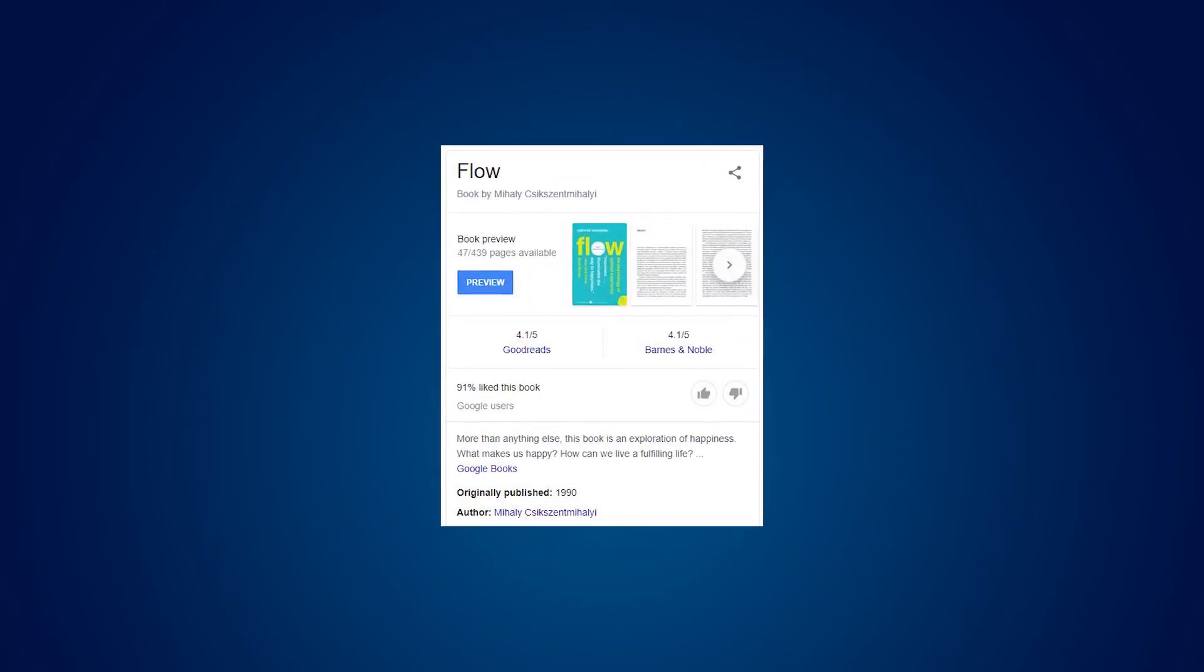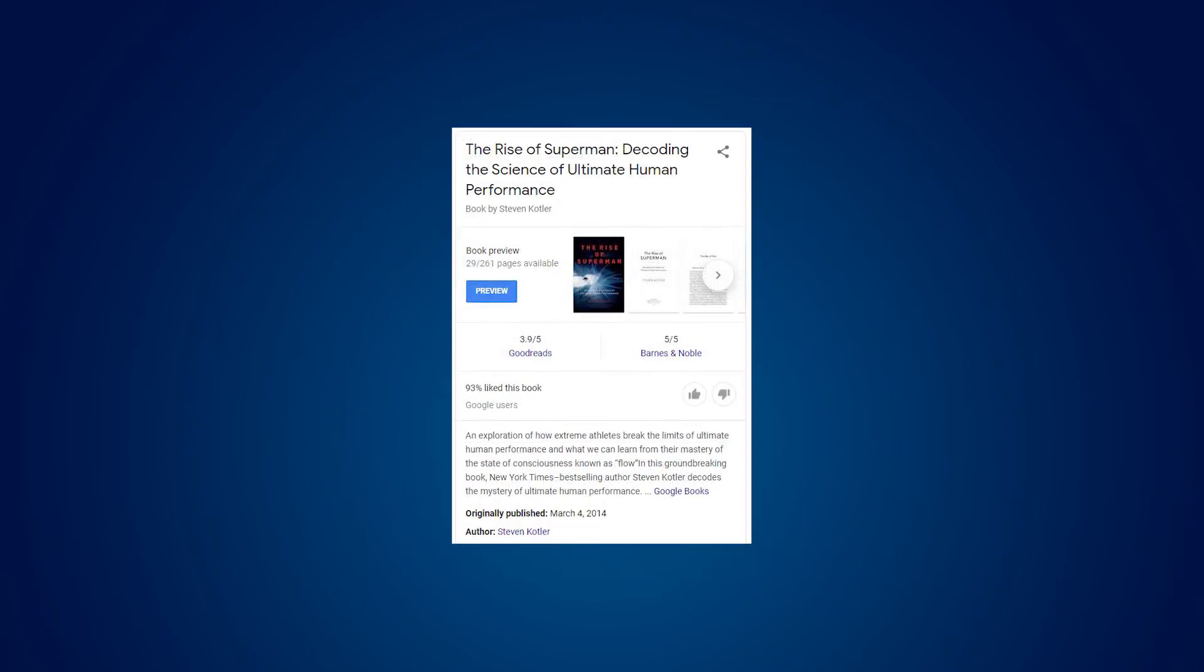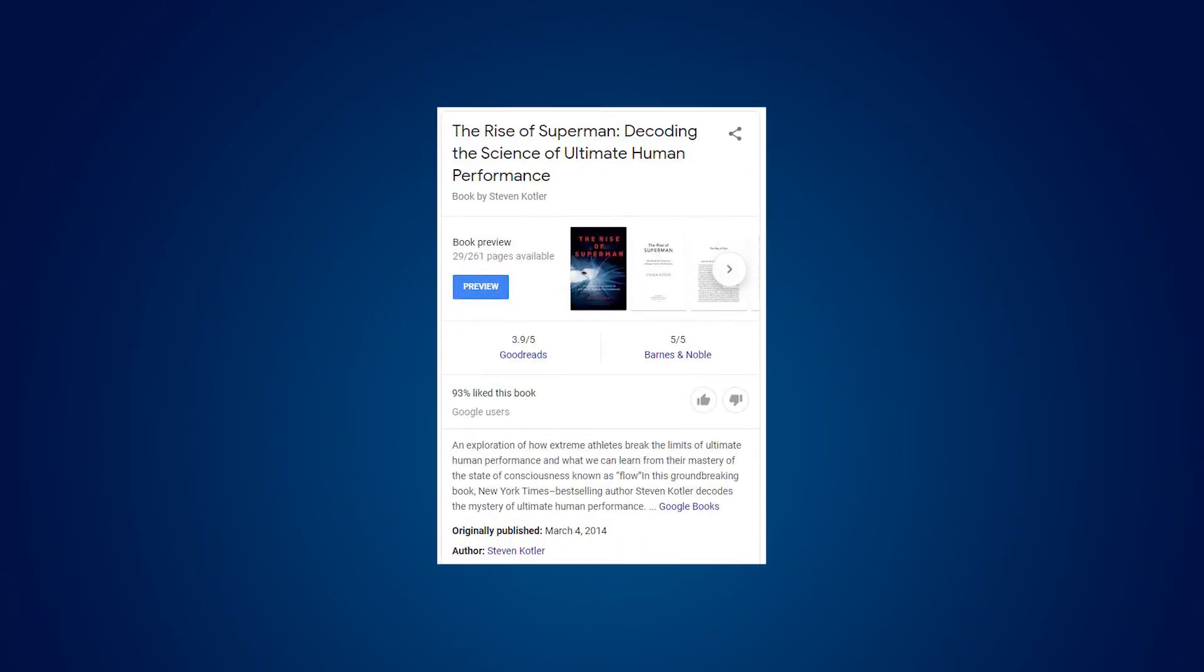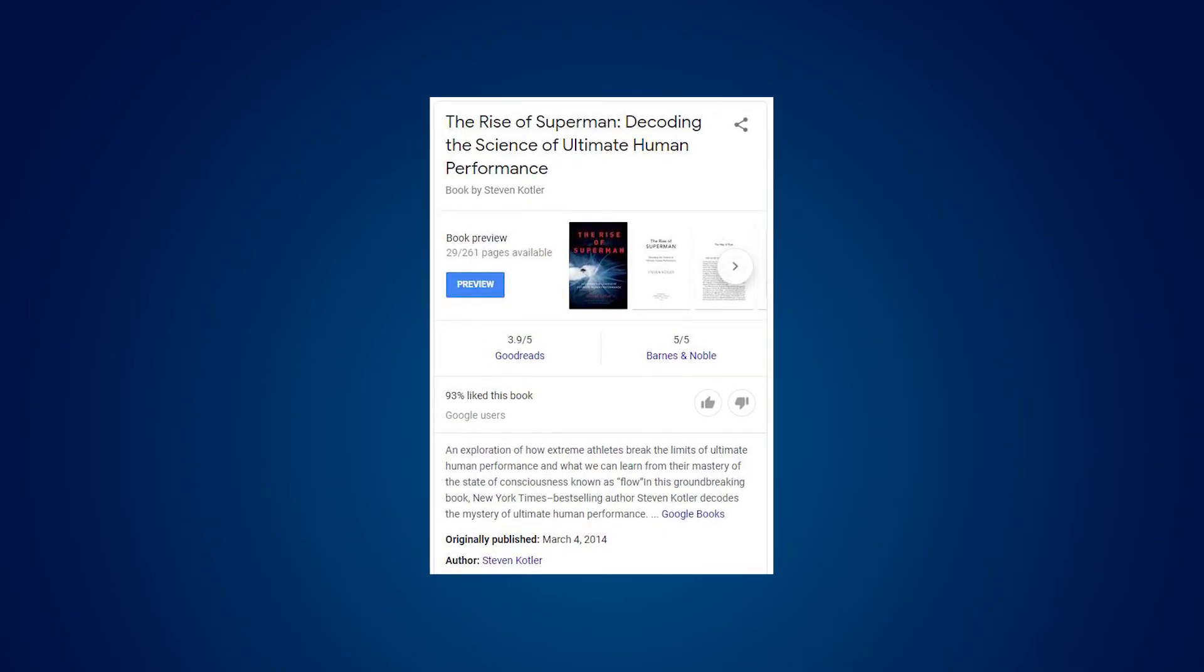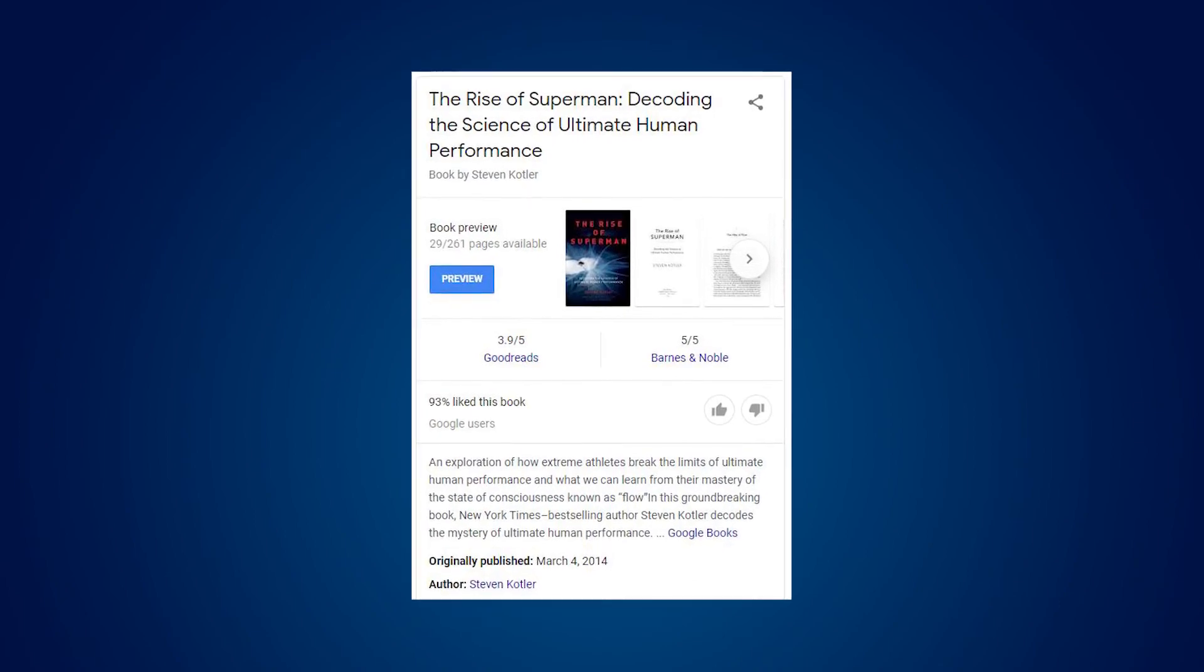If you're looking for more information about flow state research, check out Csikszentmihalyi's book, Flow, The Psychology of Optimal Experience. And if you're looking for more information on how flow states impact high performance, and just an overall fantastic read, check out Stephen Kotler's book, The Rise of Superman, Decoding the Science of Ultimate Human Performance.